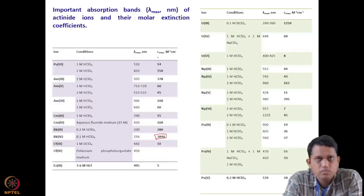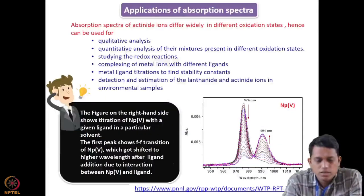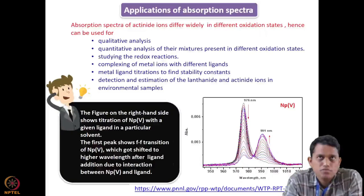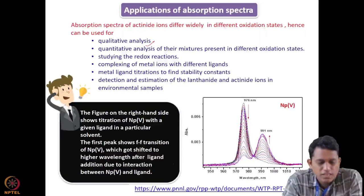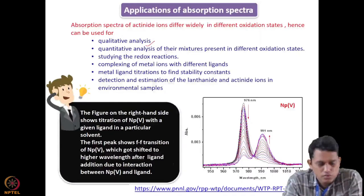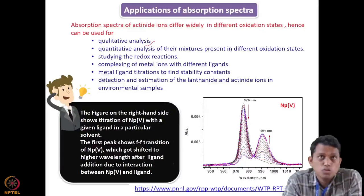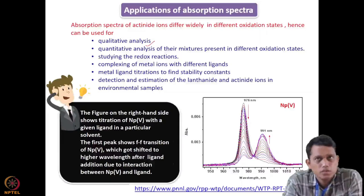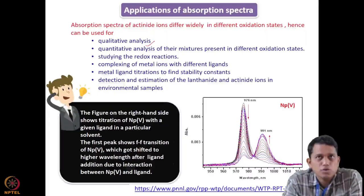In the application part we have already discussed the kind of applications using absorption spectra. The first one is quantitative analysis — if you just want to have an idea of the oxidation state you can do qualitative analysis, and you can also do quantitative analysis provided you know epsilon in the medium you are working in. If you know those epsilon values, you can do quantitative analysis.